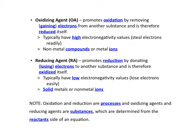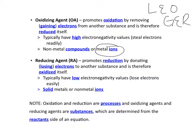An oxidizing agent, or OA, promotes oxidation by removing or gaining electrons from another substance, and is therefore reduced itself. If it's removing electrons from something else, it's gaining them — Leo says ger. These typically have a high electronegativity value, so they like electrons quite a bit. They'll steal them any chance they get. Typically we're going to see these as non-metal compounds or metal ions.